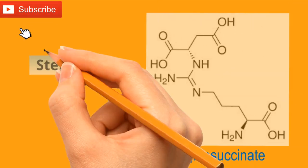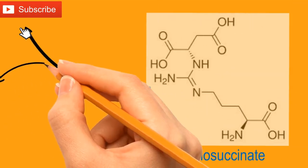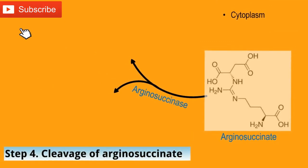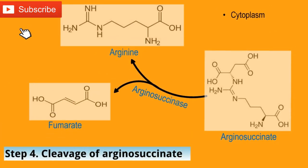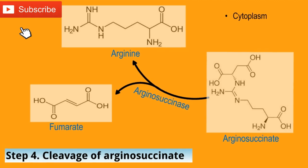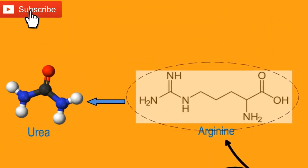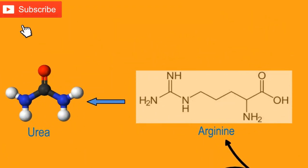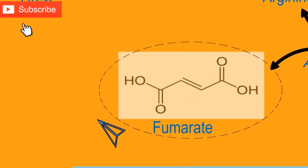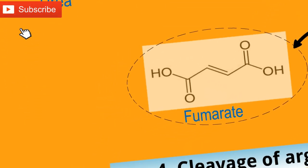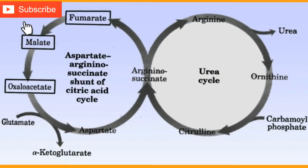In step 4, arginosuccinate is cleaved by the enzyme arginosuccinate lyase to give fumarate and arginine. Arginine is the immediate precursor for the formation of urea. The fumarate liberated here provides a connecting link with the TCA cycle and gluconeogenesis.